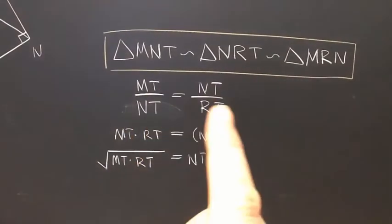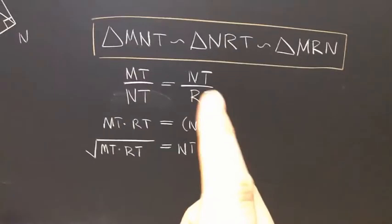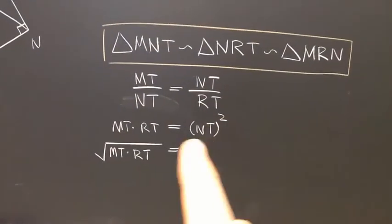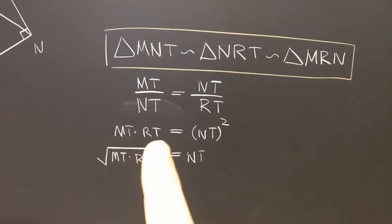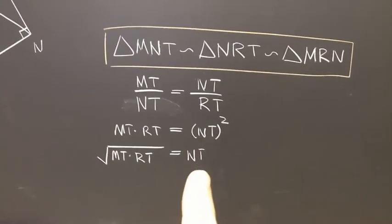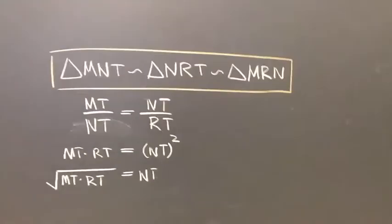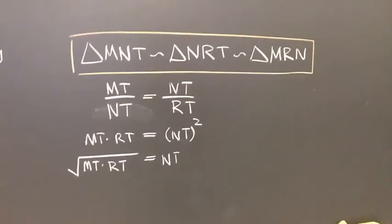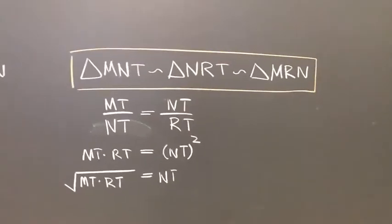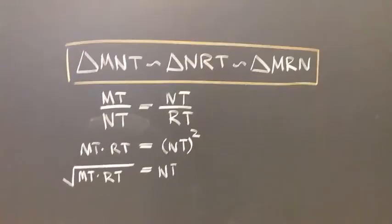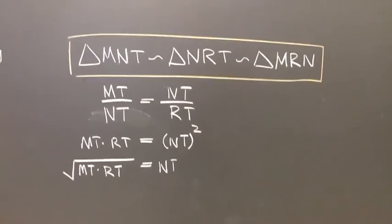Do the cross product. Multiply the means and the extremes. So the square of NT is equal to the product of MT times RT. And it turns out that NT is the geometric mean of MT times RT. And so the reason why the similarity statement is so important is because from the similarity statement, we can set up our ratios.